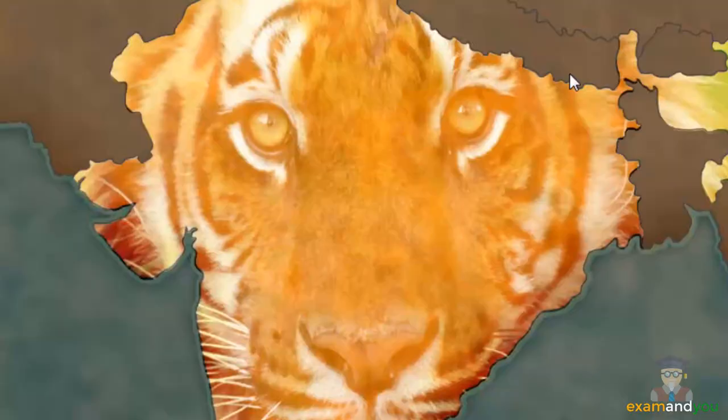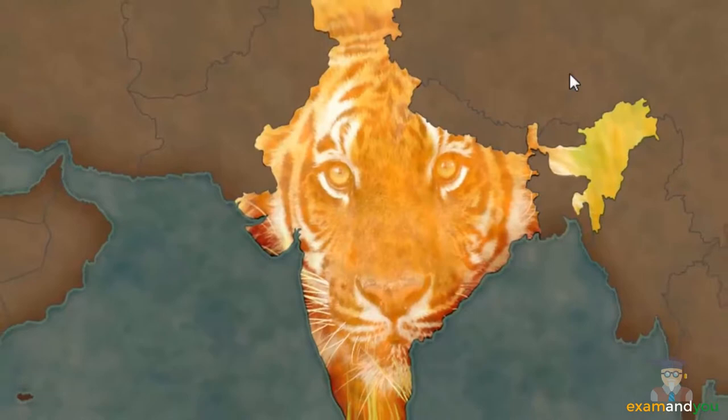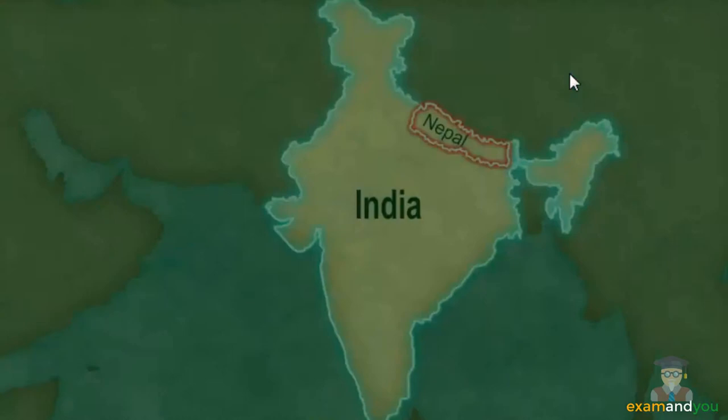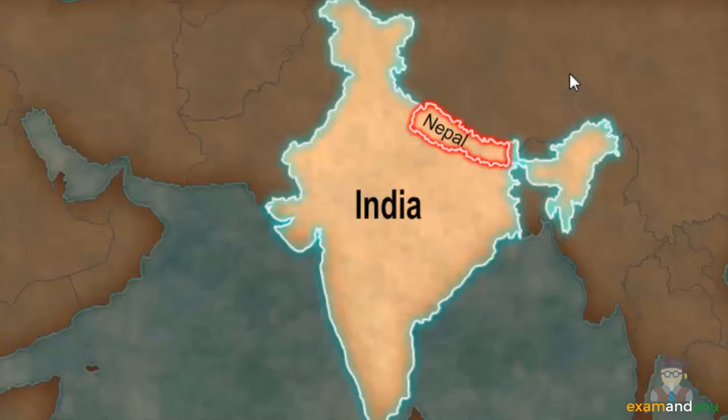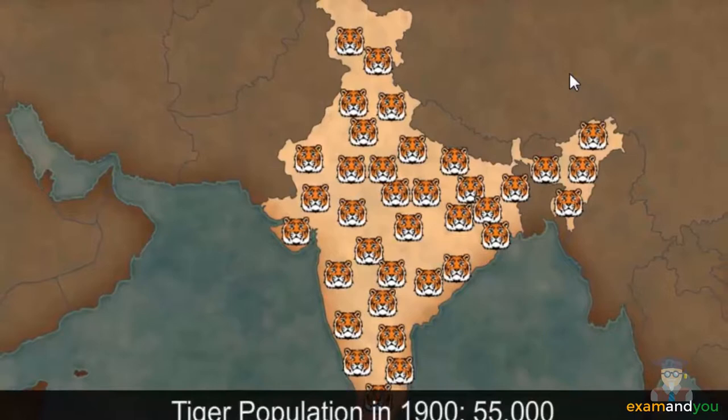One conservation project that requires important mention in India's wildlife conservation effort is dedicated to our national animal, the Royal Bengal Tiger. This program is called Project Tiger. India and Nepal are home to about two-thirds of the tiger population in the world. At the beginning of the 20th century, there were an estimated 55,000 Royal Bengal Tigers in the wild.